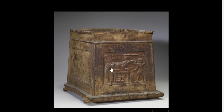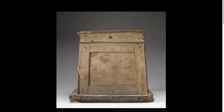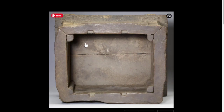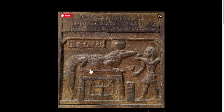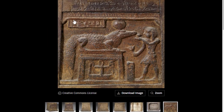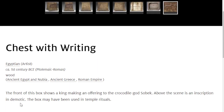Let's look at this website and see some more views of it. Here's the back, the bottom, and here it is from the top — you can see it's a box. Here's the beautiful artwork on it, and there's the crocodile. It's called 'Chest with Writing.' The front of the box shows a king making an offering to the crocodile god Sobek. Above the scene is an inscription in demotic, which is their writing system, like we use the alphabet. The box may have been used for temple rituals.